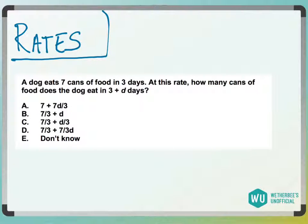So, probably the easiest way to solve this problem is to actually just pick a number. I know when to pick numbers if I see a variable in my question and then I see that same variable in my answer choices. A, B, C, and D all have D in it.